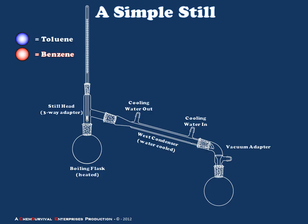Next, a vacuum adapter is added at the end of the west condenser. The vacuum adapter serves two purposes: first, diverting the flow of condensed liquid into the receiving flask; and second, having a hose barb open to the atmosphere, ensuring we are not heating a closed system. Finally, the material flows through the vacuum adapter into a receiving flask, which is placed over an ice bath or kept cool so that the condensed liquid remains in the liquid phase.